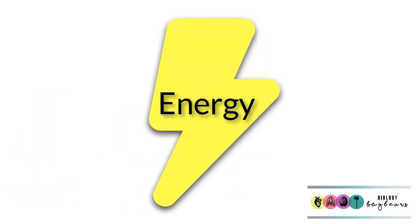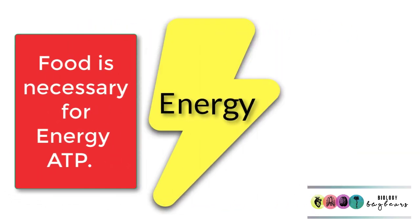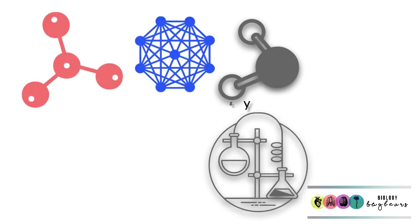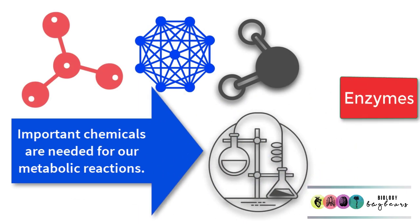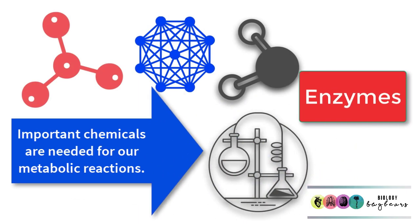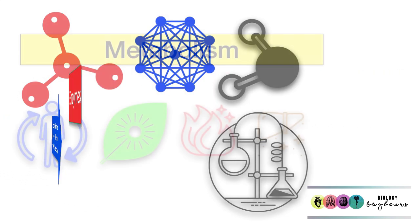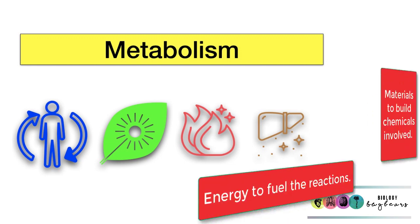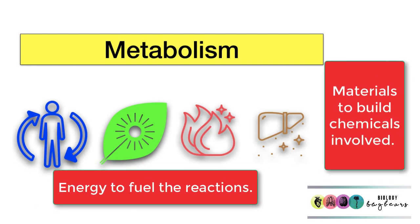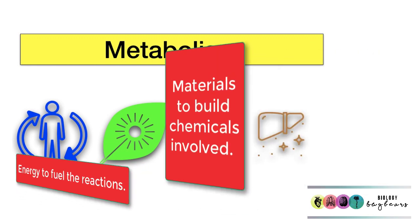Another function of food is for energy. Food is broken down and energy is released from that food — and you know that whenever we consider energy in biology, it's ATP. It's also important to consider that when food is broken down, some of those raw materials are used to build essential chemicals which play a role in all the chemical reactions taking place in our cells, with enzymes being one important group. You can see the connection between food and metabolism — all of those chemical reactions that take place inside a living organism.